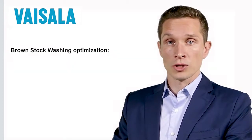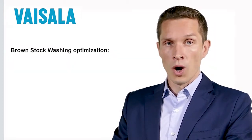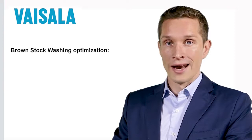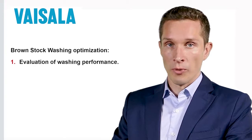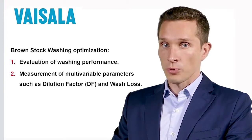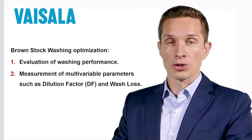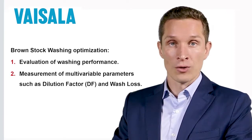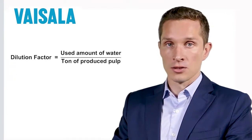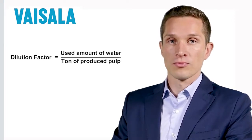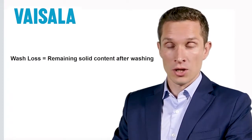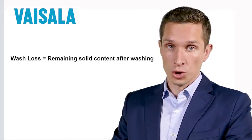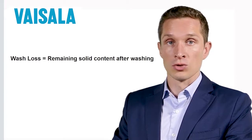So how is brown stock washing optimized? Well, first we need to measure and evaluate the washing performance. This is done by using multi-variable parameters. The two principal parameters to measure are called dilution factor and wash loss. The dilution factor indicates the used water amount per ton of pulp. Wash loss is the dissolved material or dissolved solids which were not removed in the washing but instead continue to the bleaching stage.